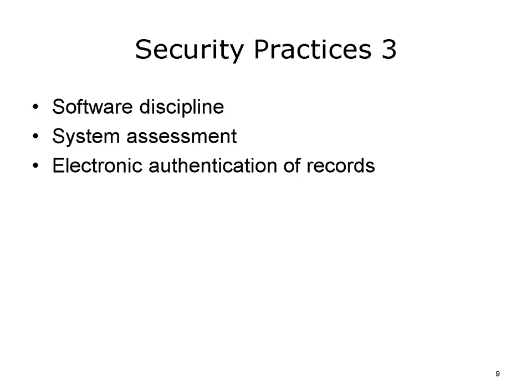Other practices include software discipline. This means that organizations must put policies in place about appropriate software that can be installed on systems, and to protect systems from inappropriate software, virus checking programs also need to be in place. Continuous assessment of the systems also needs to be done to assure that policies are followed and that there are no breaches of security. If caregivers actually enter information into the record, there should be electronic authentication of records, preferably with digital signatures. These are encoded identifiers of the caregivers who have written in the record, so there is a record of who has entered or changed anything.